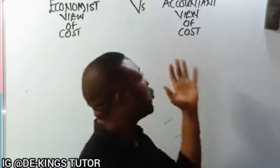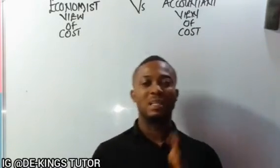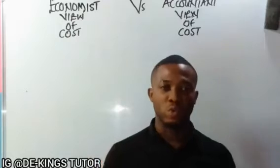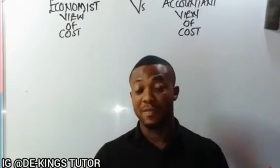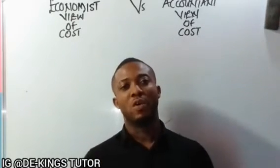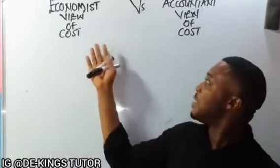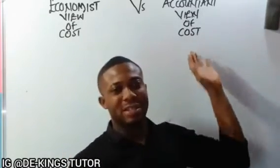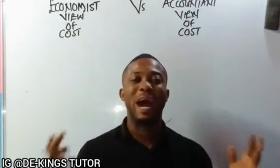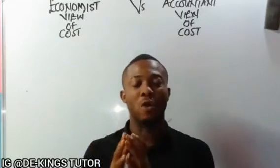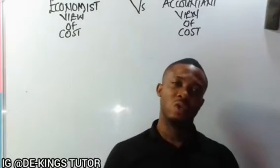We want to continue with a different series. We want to look at the difference between two given items and two given terms. Today we want to look at the economics view of cost and the accountant view of cost — how the economist sees cost and also how the accountant sees cost.